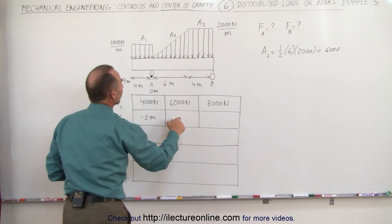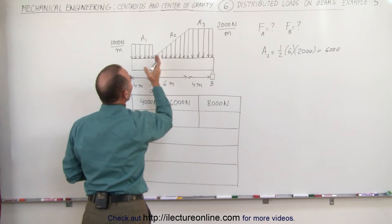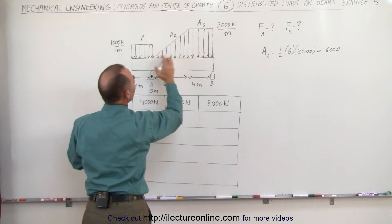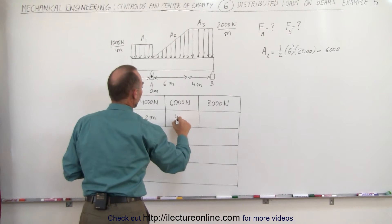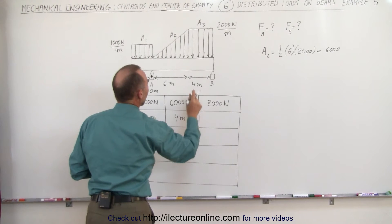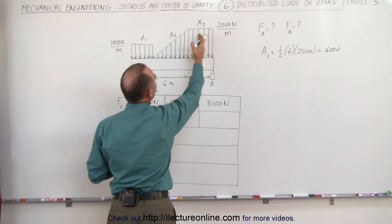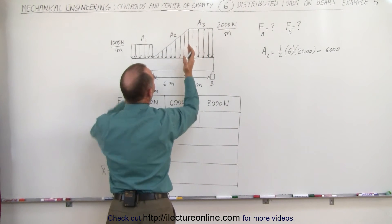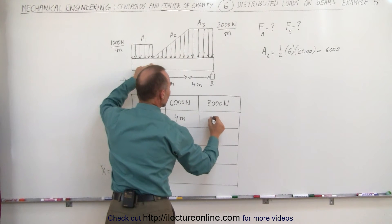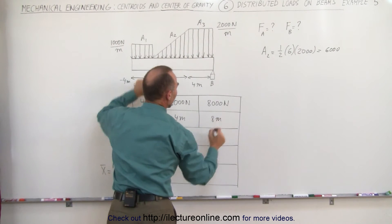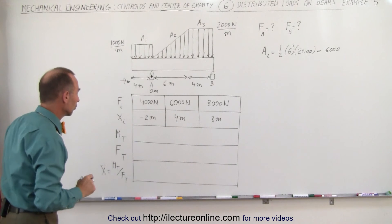The x-coordinate of the centroid of the triangular piece is two-thirds of the distance from its start to its end, which is 4 meters. For the last segment, the centroid is at the halfway point, 2 meters from its left end, placing it at 6 plus 2 equals 8 meters. So that gives us the three centroids of the three force contributions.